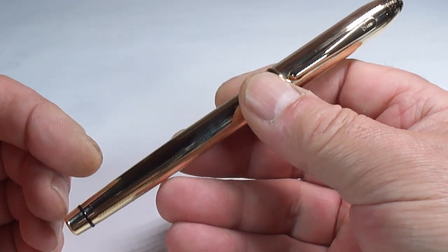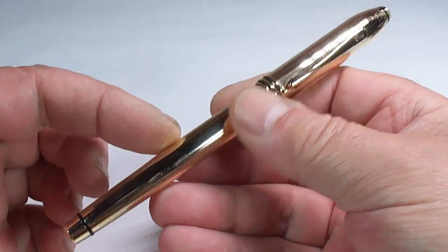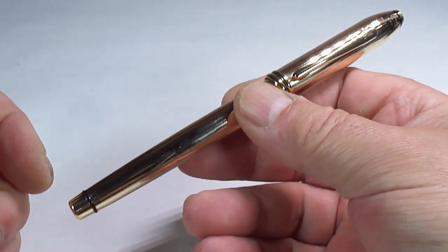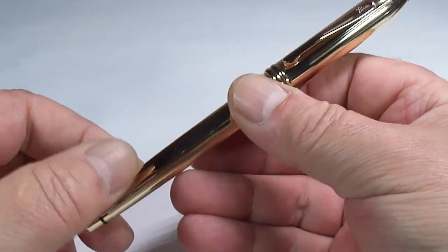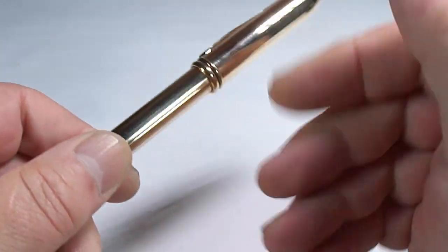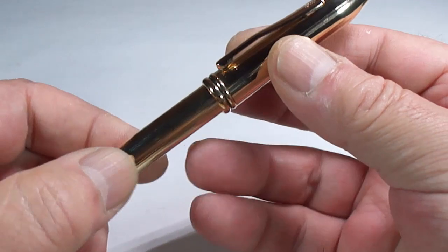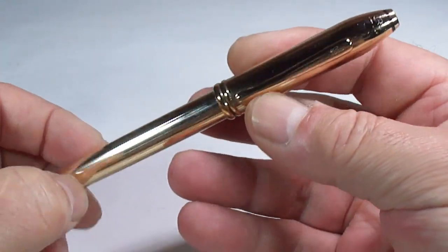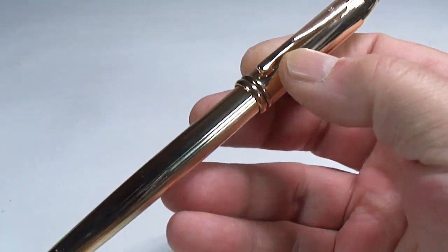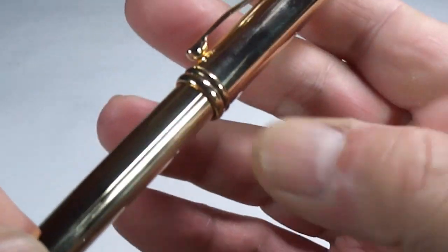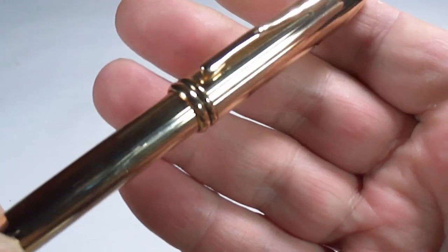We've got a Cross Townsend fountain pen, this one's made in USA. The size of this pen capped is around about 150 millimeters. Around the barrel, just below the cap, it's around about 11 millimeters in diameter. The cap has these two quite large protruding cap bands.